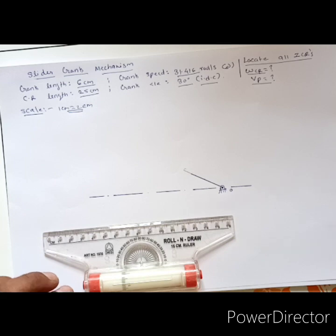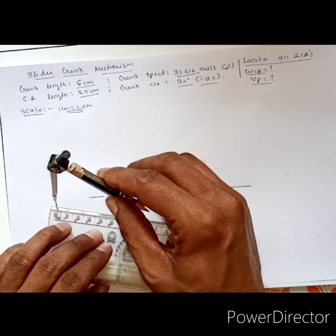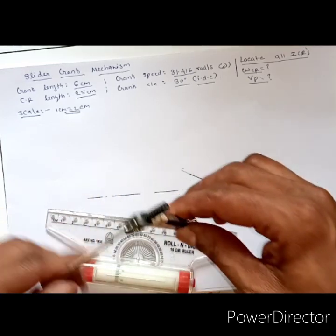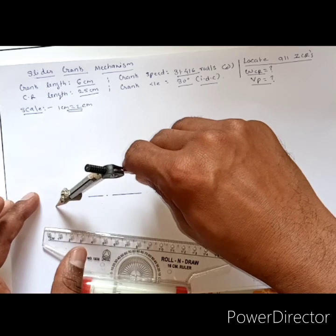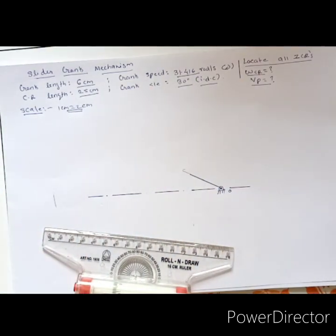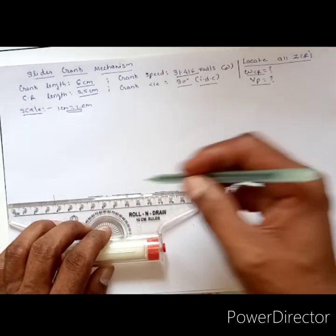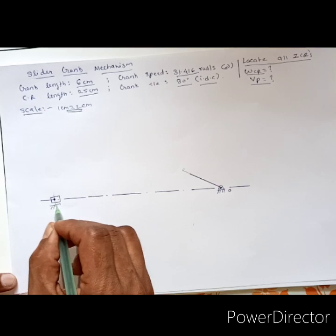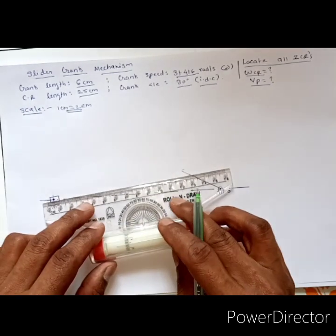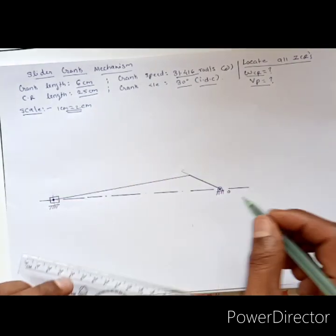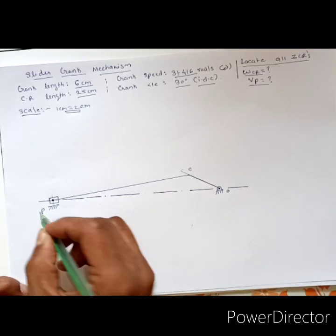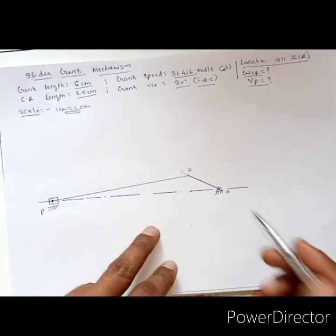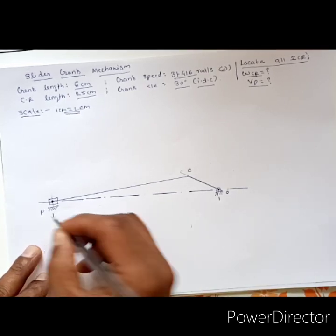Connecting rod length is 25 cm, so 25 divided by 2 equals 12.5 cm on the drawing. This gives us the position of the piston. We draw the piston and connecting rod, naming the crank pin as C and piston pin as P. After the configuration diagram is drawn, we number the links: the fixed link is link 1, crank is link 2.